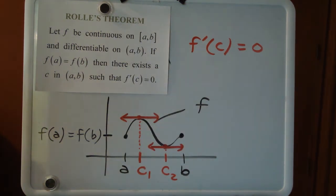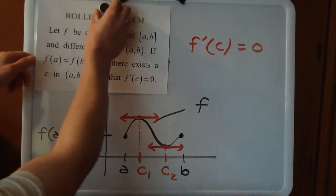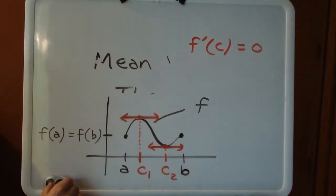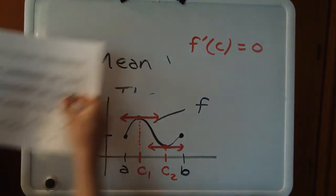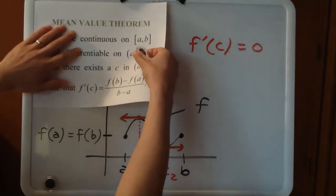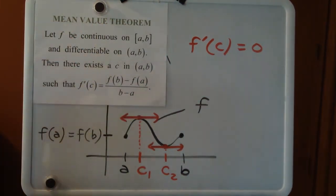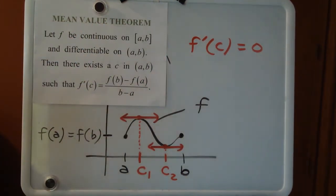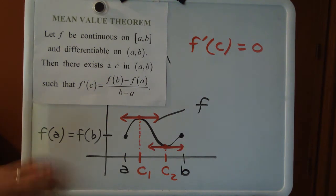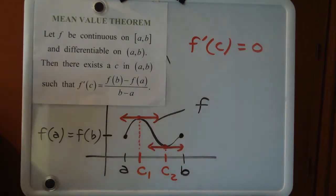That's the statement of Rolle's theorem. Now we're going to move on to the bigger theorem — the main event of this lesson — called the mean value theorem. We'll be able to make connections to Rolle's theorem and talk about how the two theorems are really, really similar.